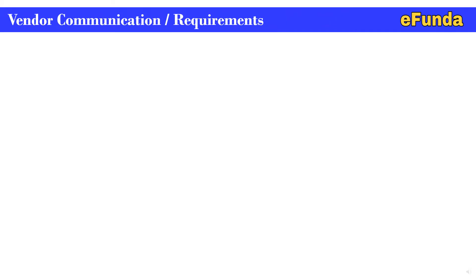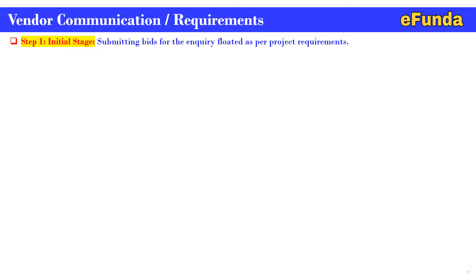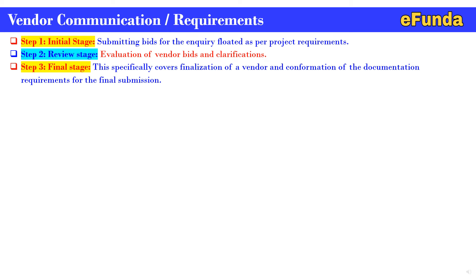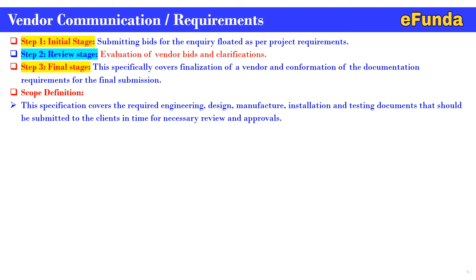Moving on to vendor communication requirements, we will cover the steps for better understanding. Step 1 is the initial stage: submitting bids for the inquiry floated as part of the project. Step 2 is the review stage: evaluation of vendor bids and clarifications. Step 3 is the final stage: finalization of a vendor and confirmation of the documentation requirements for final submissions. This specification covers the required engineering design, manufacture, installation, and testing documents that should be submitted to clients in time for necessary review and approval.